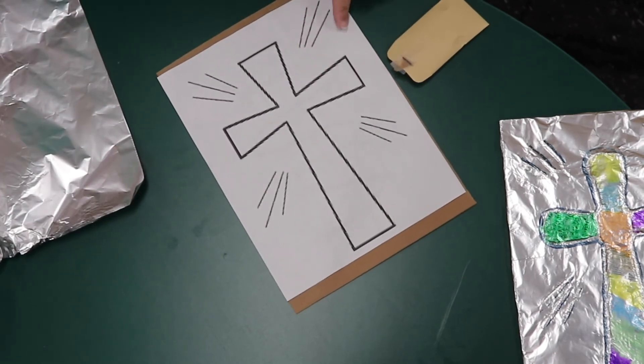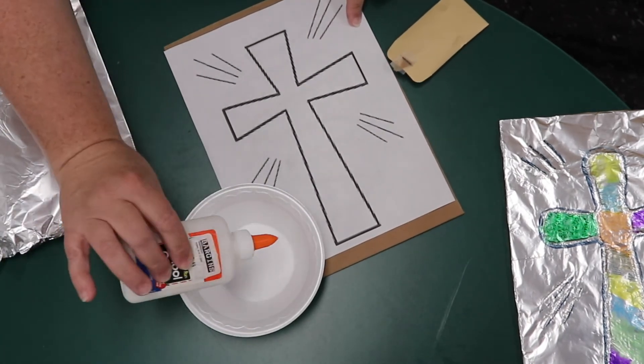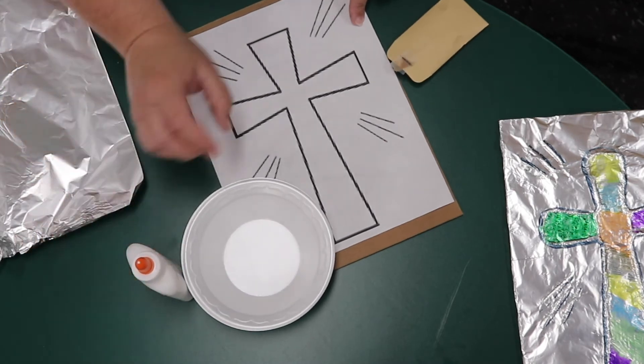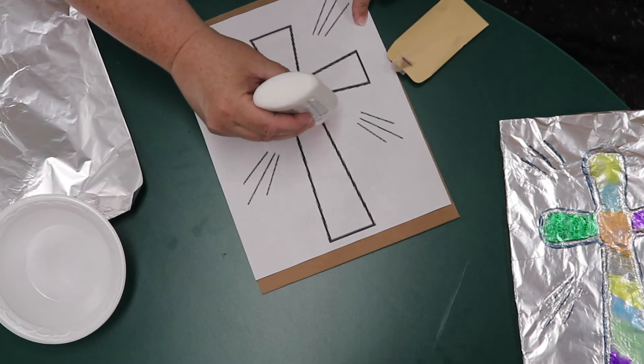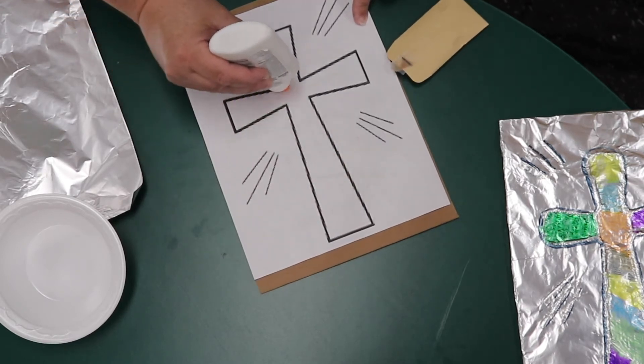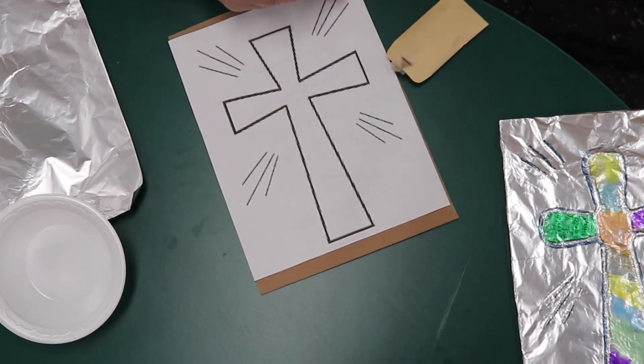You're going to need some glue again. If you want to put it in here and use your finger, you can do that. So you're going to put glue all over the outline of the cross and on your little lines here.